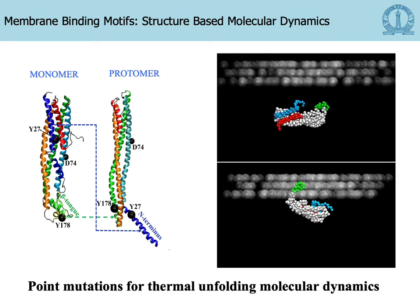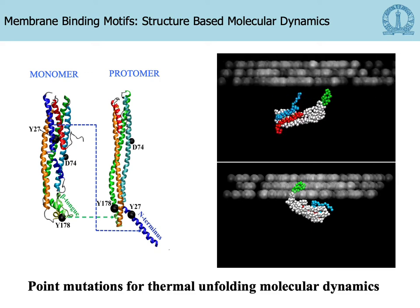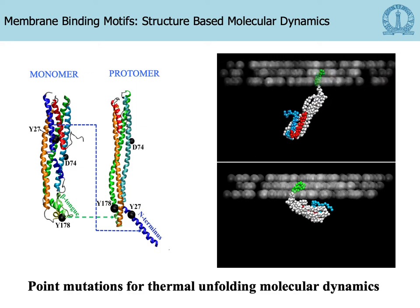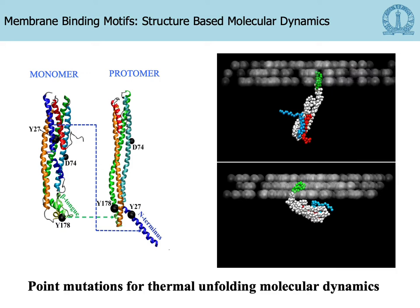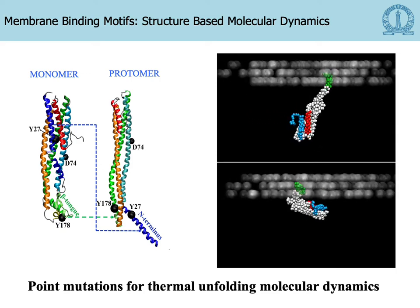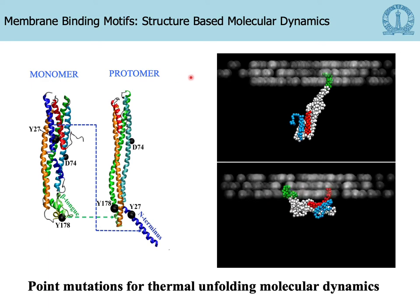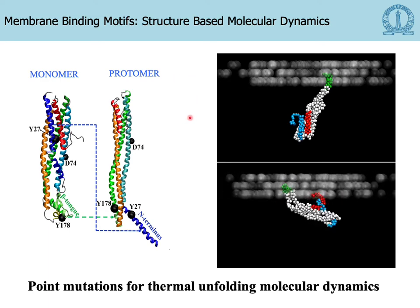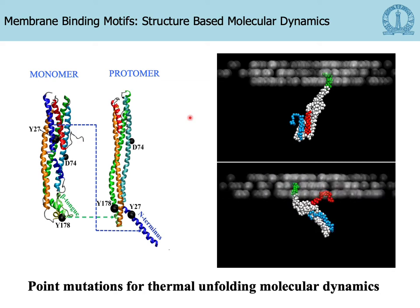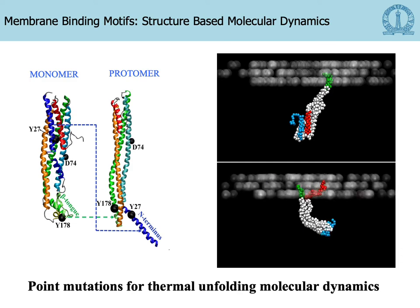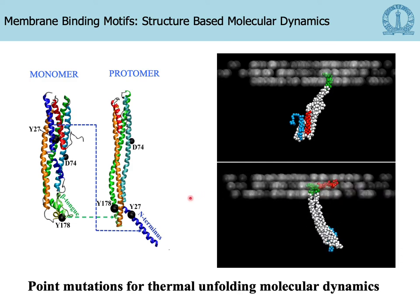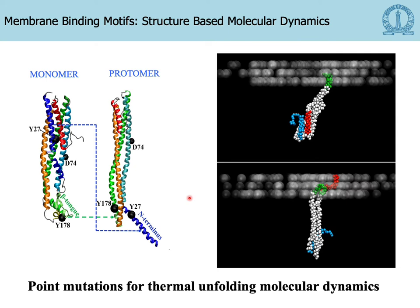We look at the key membrane-binding motifs using structure-based molecular dynamics simulations — reduced representations of the protein widely used to study protein folding pathways. In this video, you see the monomer with the green region shown as the beta tongue sampling the membrane shown above with beads. You see the beta tongue first samples the membrane and inserts. Subsequently, the N-terminus, shown in red, starts to sample the membrane and convert to the full protomeric form. We carried out about 100 repeats for these simulations, and about 80% of the time this is the dominant pathway.